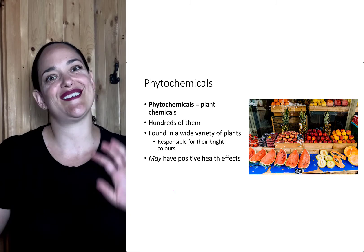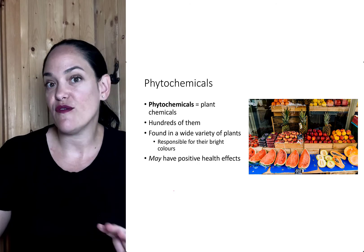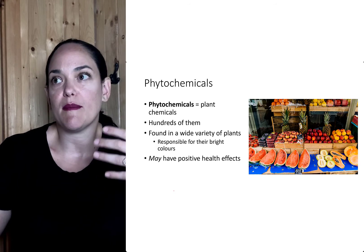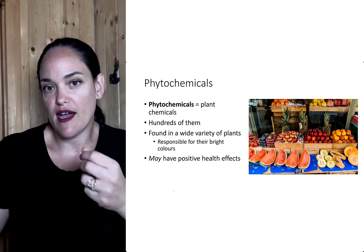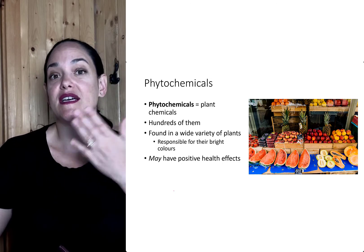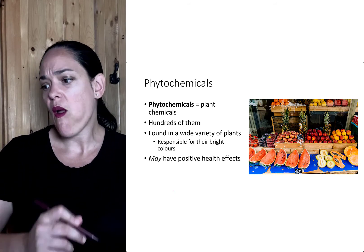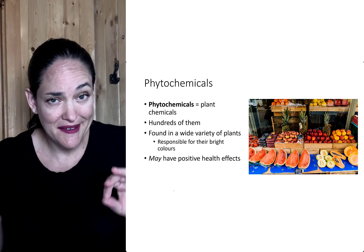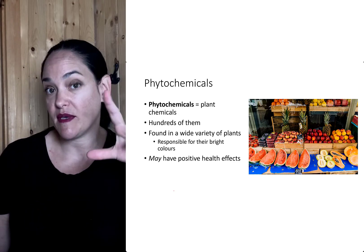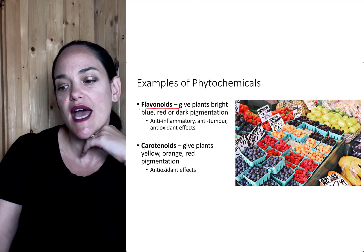Phytochemicals are one of the reasons we recommend eating lots of different colors of fruits, vegetables, and plants. Phytochemicals are plant chemicals — that's what the name means. They are substances that plants produce in order for them to grow and thrive, but when we consume them, they tend to have some disease-reducing effects, although we're still researching their full effects. There are hundreds of these, but the two main ones I want to focus on are flavonoids and carotenoids.